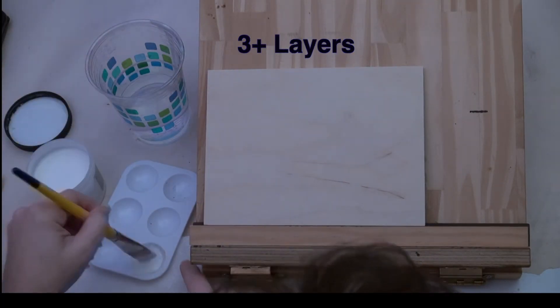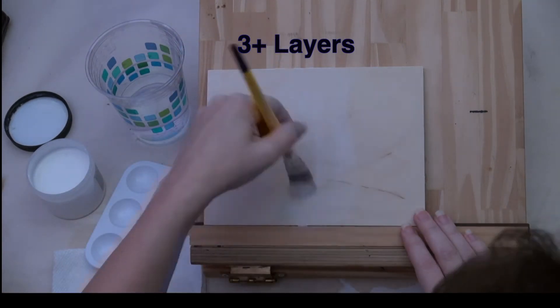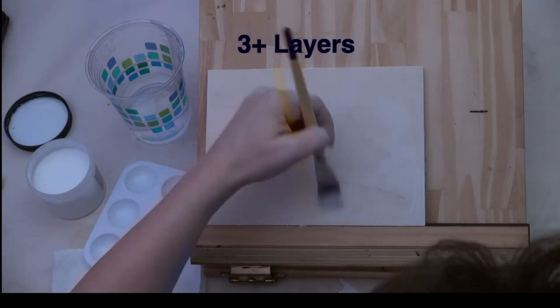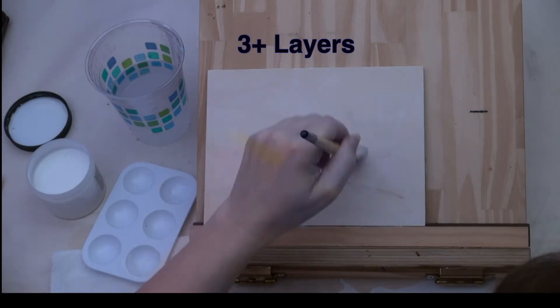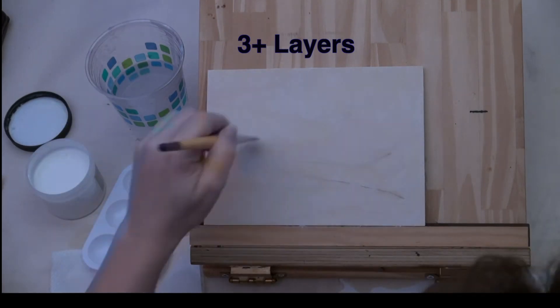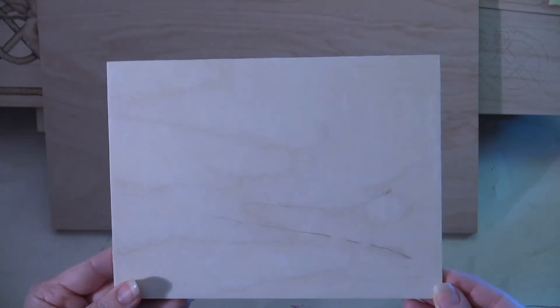For all additional layers, do the exact same steps that were done during the second layer. Let each layer dry for 30 to 60 minutes before applying the next layer. Also lightly sand before applying the next layer. This board has a smooth finish.